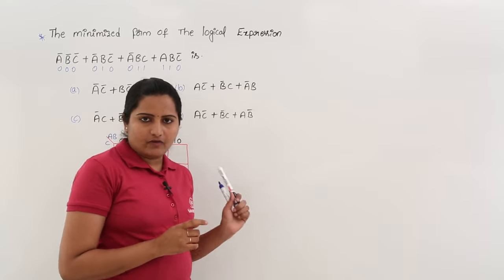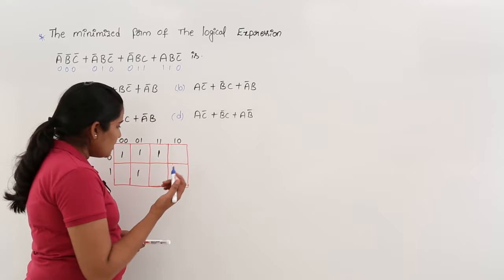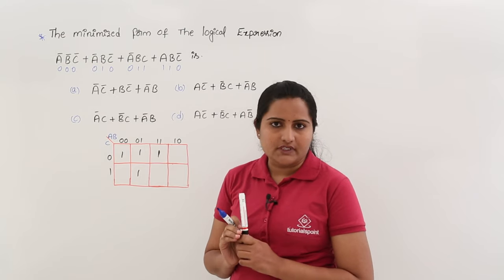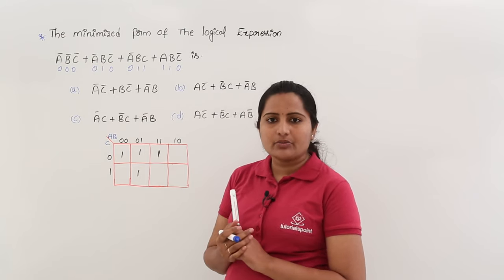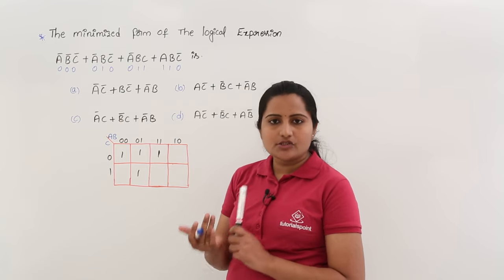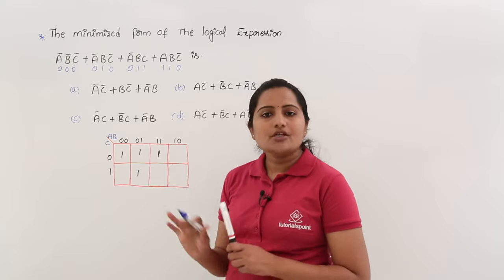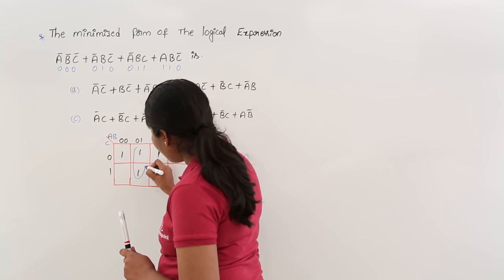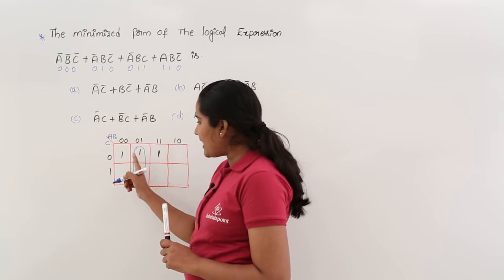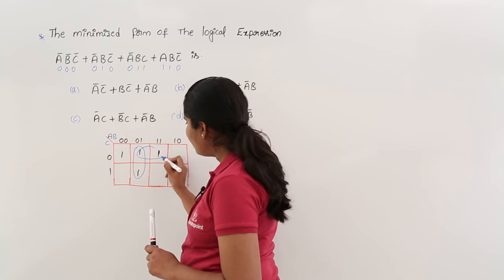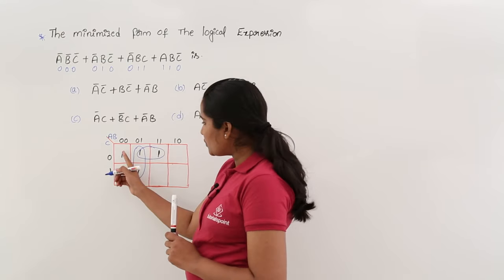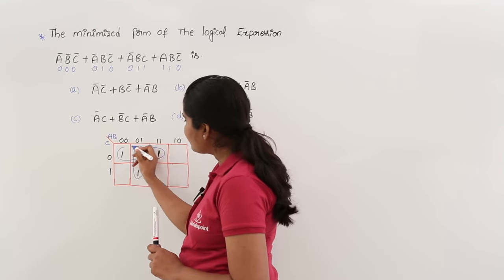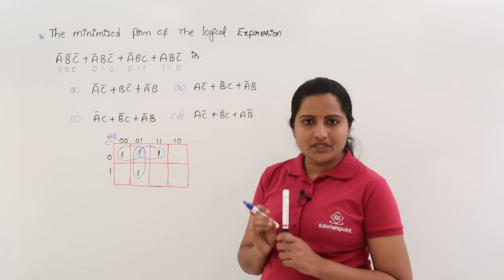Now I am going to group the number of 1s into prime implicants. Is there any quad possible? With only 4 ones, no quad grouping is possible. Next possibility is doubles — yes, doubles are possible. The first double groups one pair, and I am overlapping this double group to cover another one. To group the remaining one, I again use an overlapped group. These are my 3 essential prime implicants.